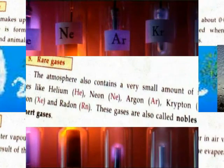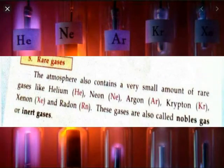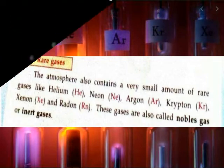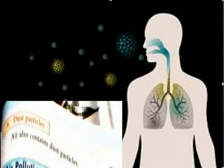The atmosphere also contains very small amounts of rare gases like helium, neon, argon, krypton, xenon, and radon. These gases are also called noble gases or inert gases.